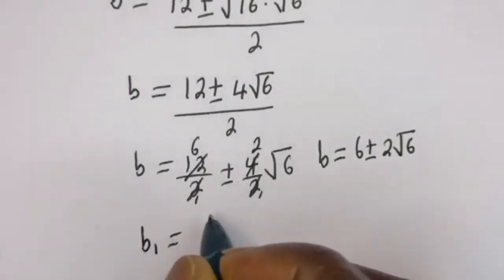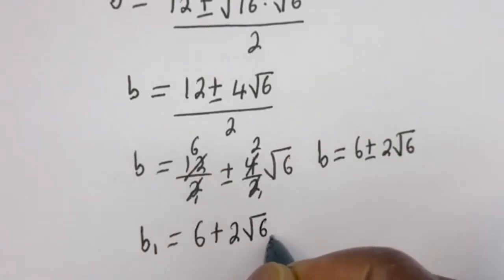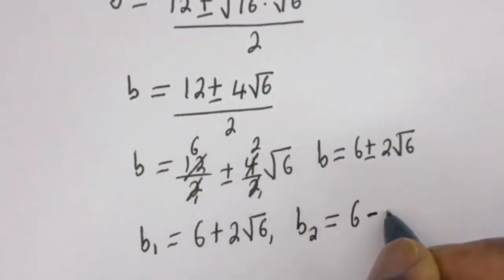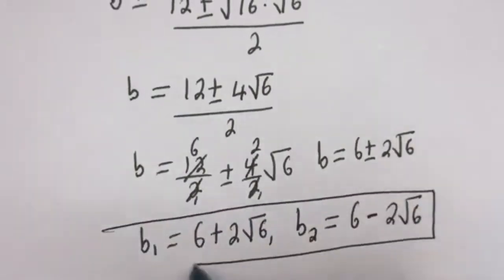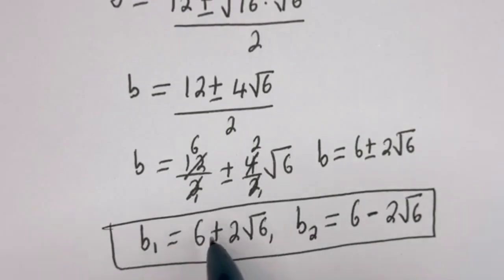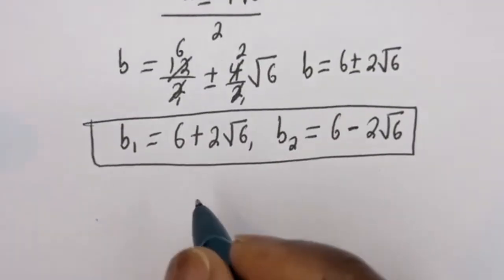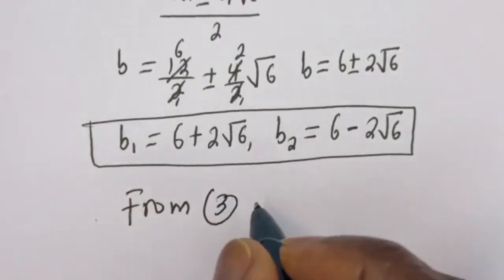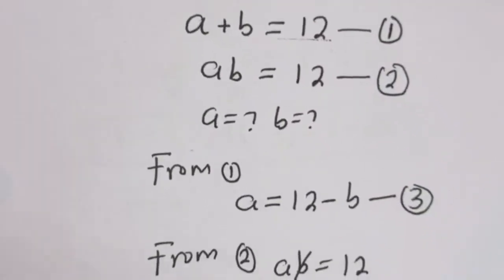Therefore b1 is equal to 6 plus 2 root 6, and b2 is equal to 6 minus 2 root 6. These are the values of b. We can solve for a, since we've gotten the values of b, using equation 3, which is a equals 12 minus b.